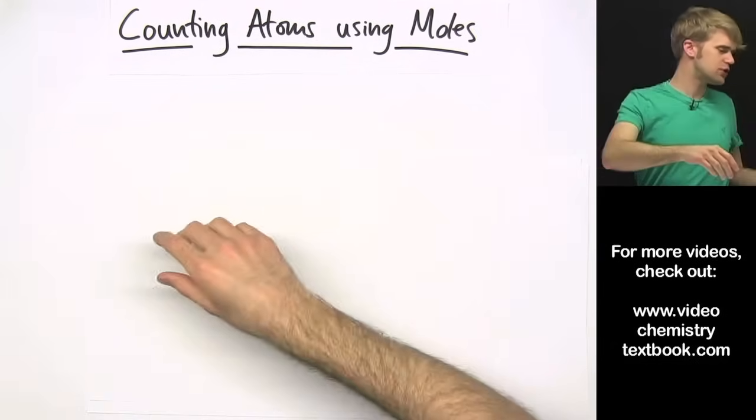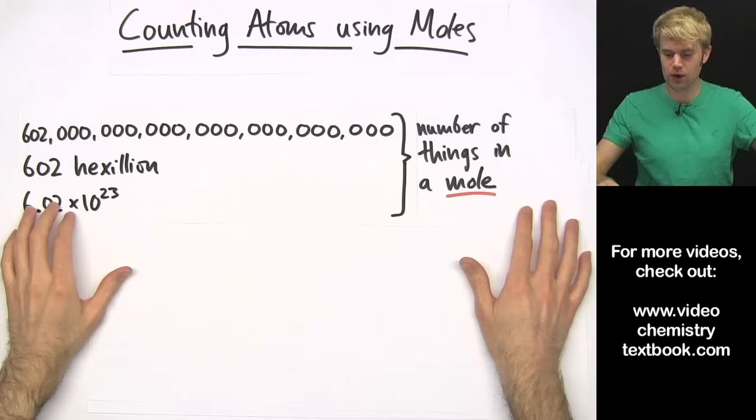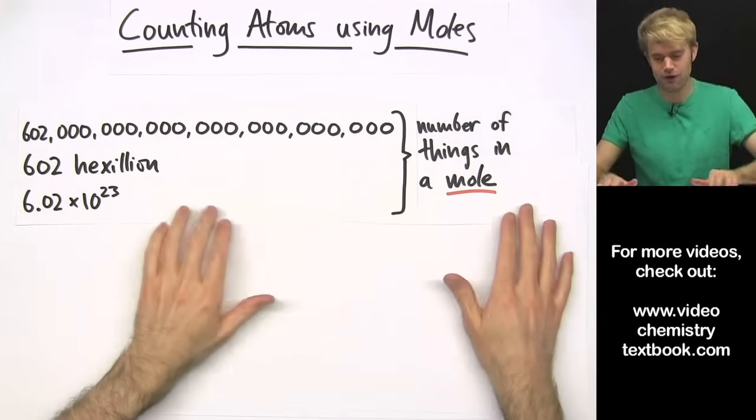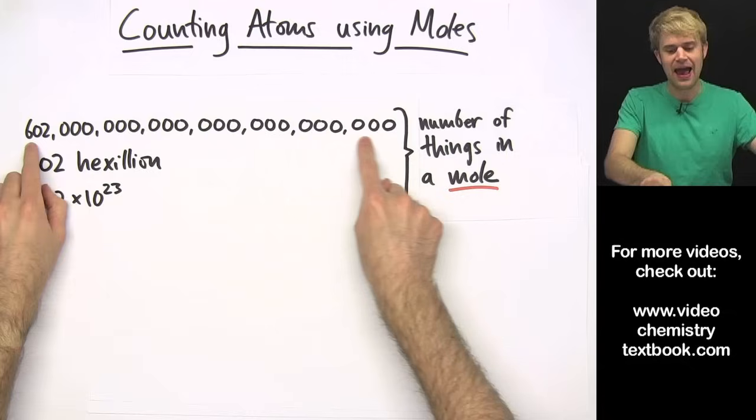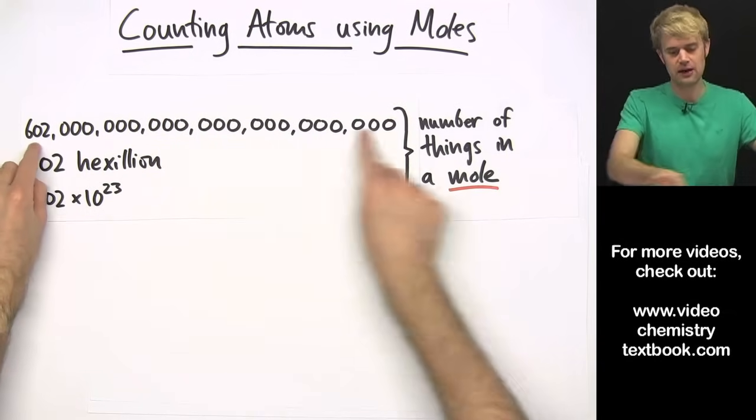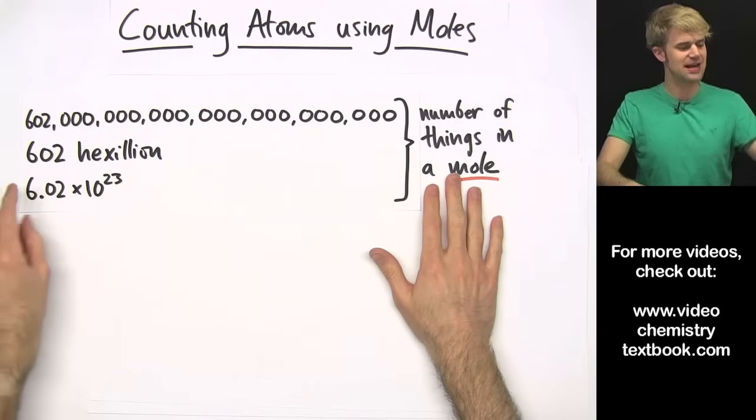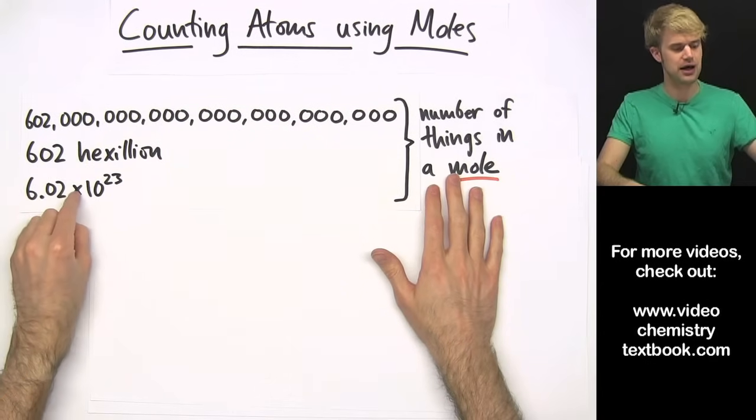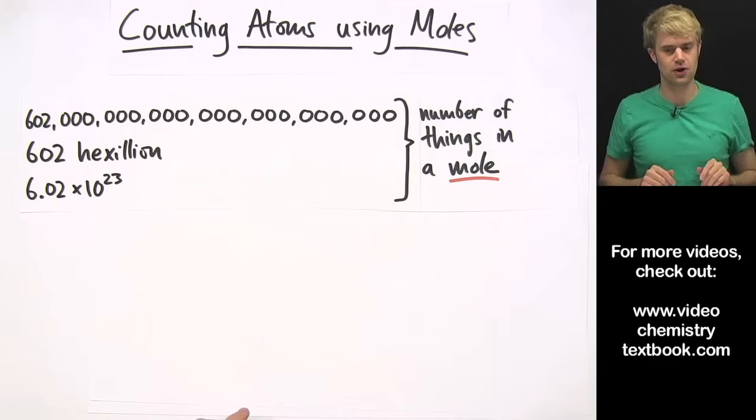So just a quick review of moles. A mole is kind of like a dozen except there are 12 things in a dozen and there are 602 hexillion things in a mole, and we often abbreviate this number in scientific notation as 6.02 times 10 to the 23rd.